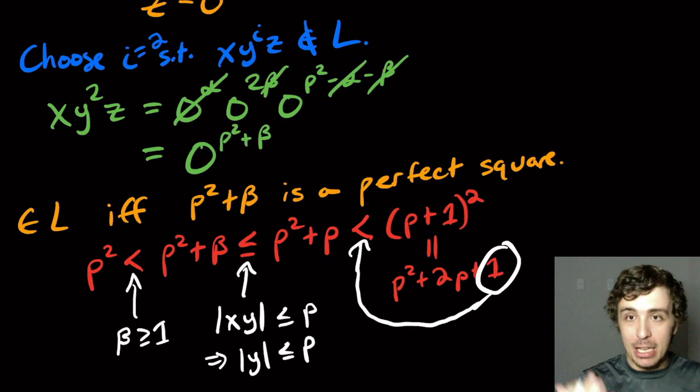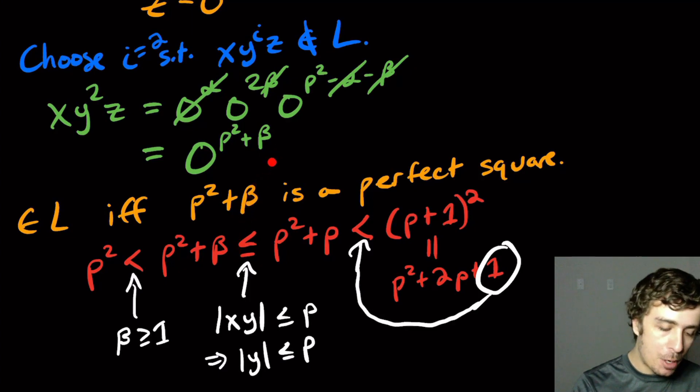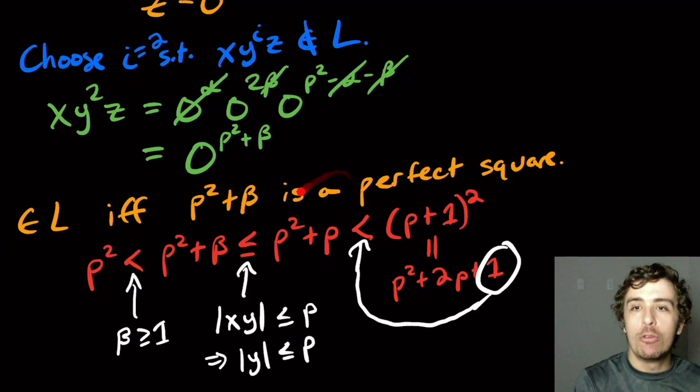And so that's how you show that this is not a regular language. Because if it were, then we would always hit a perfect square no matter what i value you choose. But we just chose one where we landed on a non-perfect square, this thing right here.